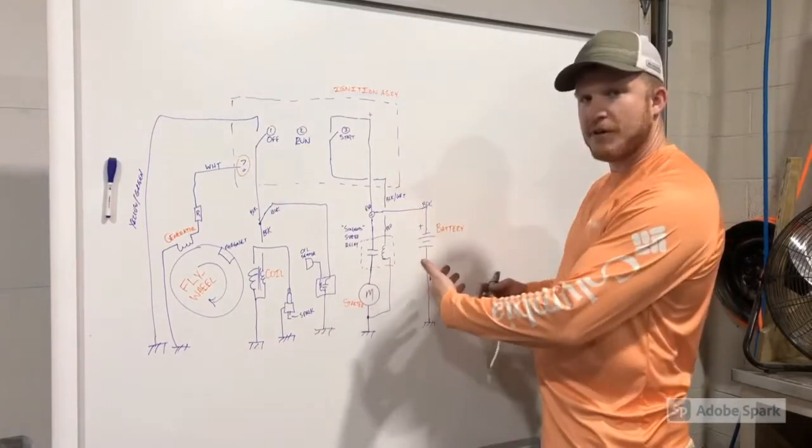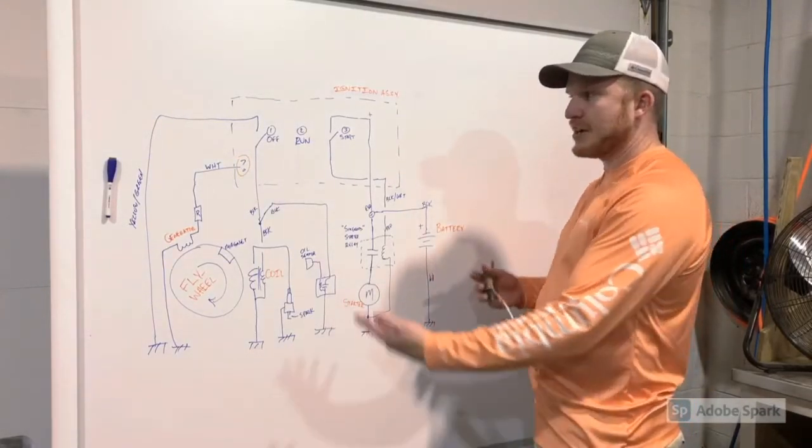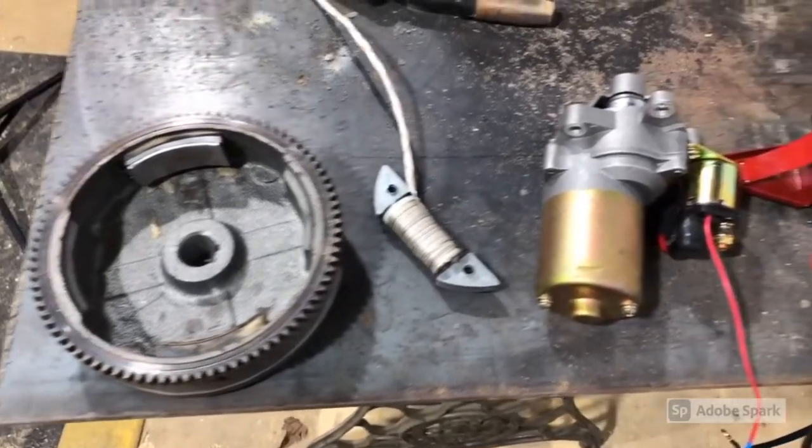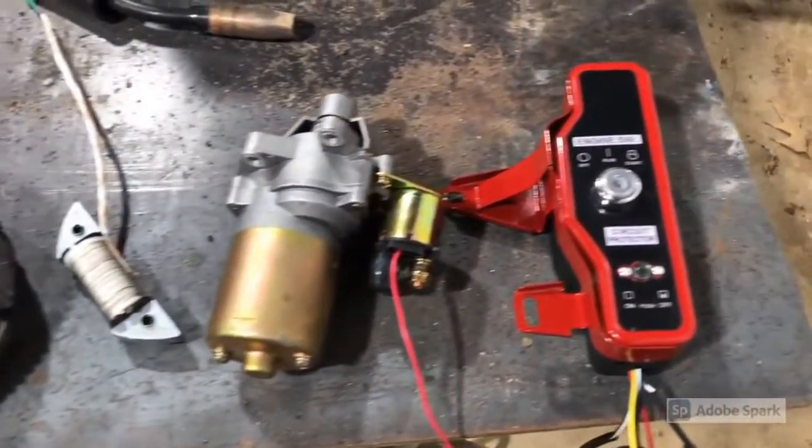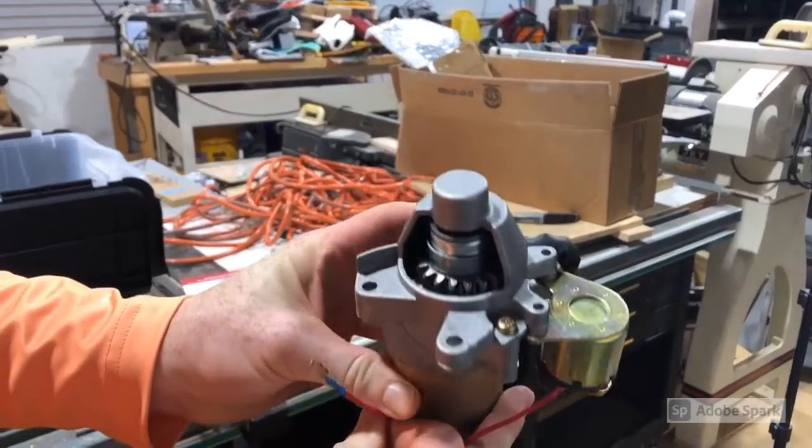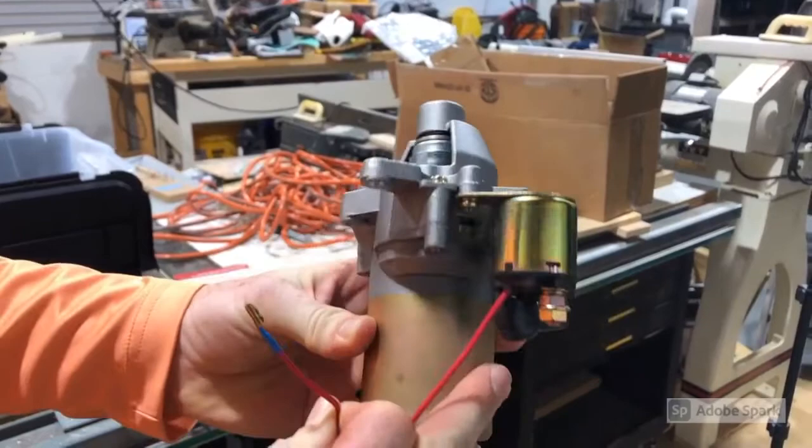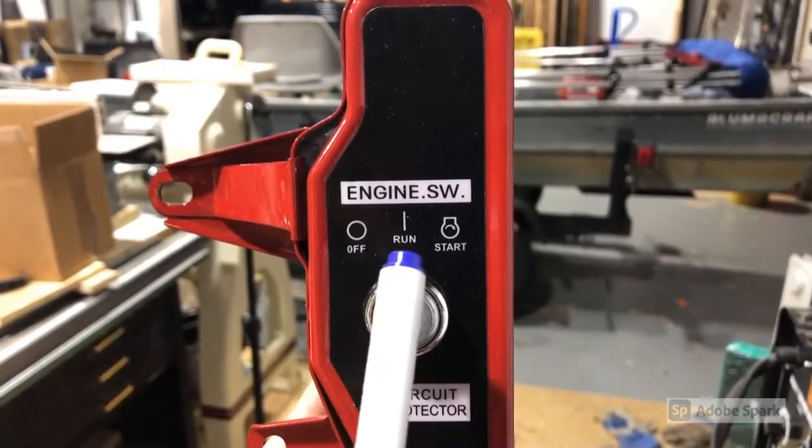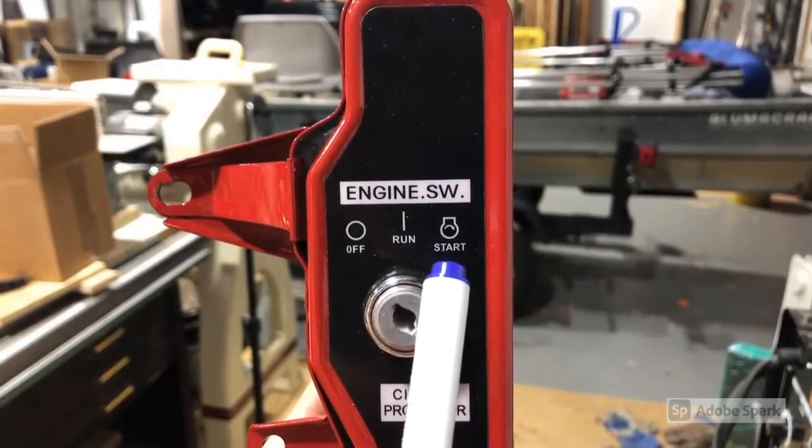So those are all the components. I hope that's a little helpful to see the 3D object on the 2D display. And here's each of the parts that I just showed you up on the board. And here's a close-up of the starter motor with the solenoid on the side. And again, a close-up of the ignition assembly with the three positions.